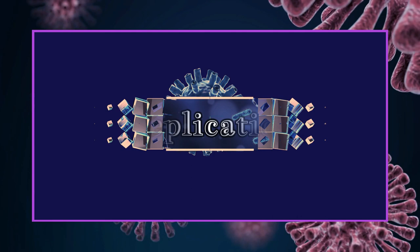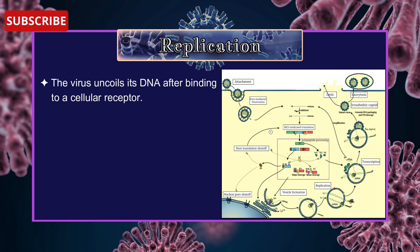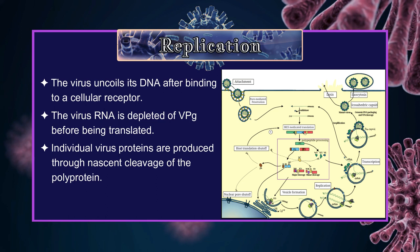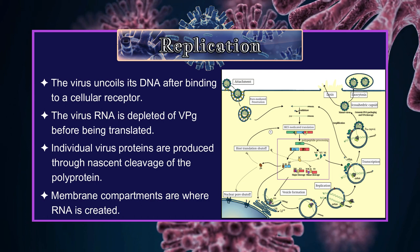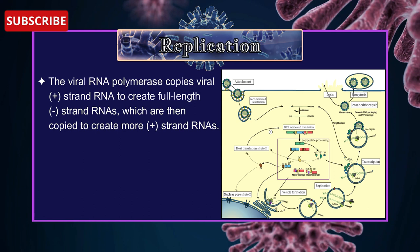Replication of Poliovirus. With the help of this diagram, we will understand the replication. The virus uncoats its RNA after binding to the cellular receptor. Next, the virus RNA is depleted of VpG before being translated. Individual virus proteins are produced through nascent cleavage of the polyprotein. Membrane compartments are where RNA is created. The viral RNA polymerase copies viral positive-strand RNA to create full-length minus-strand RNAs, which are then copied to create more positive-strand RNAs.